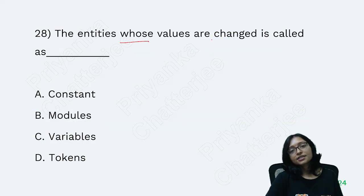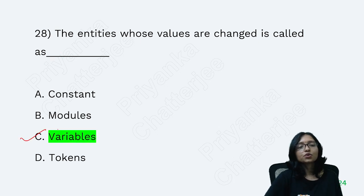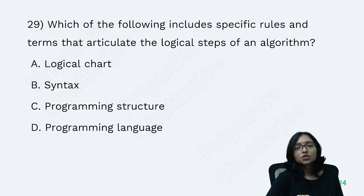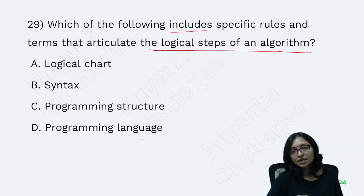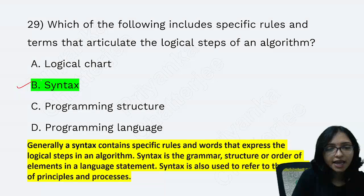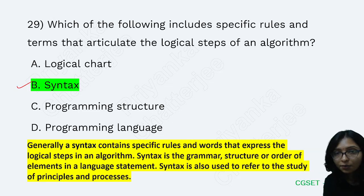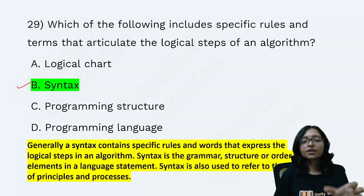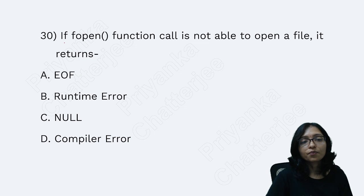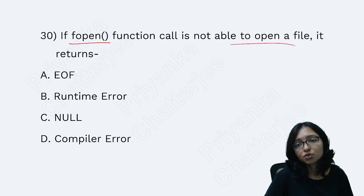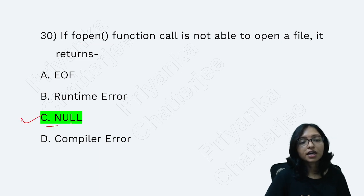An entity whose value changes is called a variable — an easy question but students often make mistakes. Which of the following includes specific rules of logical steps in an algorithm? That is called syntax. Syntax contains the specific rules and words that express a logical step in an algorithm; it is also the grammar structure or order of elements in a language. When a file open function (fopen) is not able to open a file, it returns null.